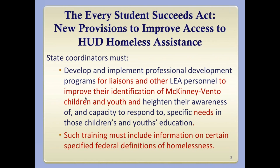The next couple of slides look at the new requirements in ESSA. The blue language is current law and the reddish letters are things that are new within ESSA. There's a new requirement at the state level for state coordinators for McKinney-Vento to develop and implement professional development programs for liaisons and other LEA — local educational agency — personnel. The purpose is to improve identification of McKinney-Vento children and youth and heighten awareness and capacity to respond to their specific needs. This is now a clear and new requirement.